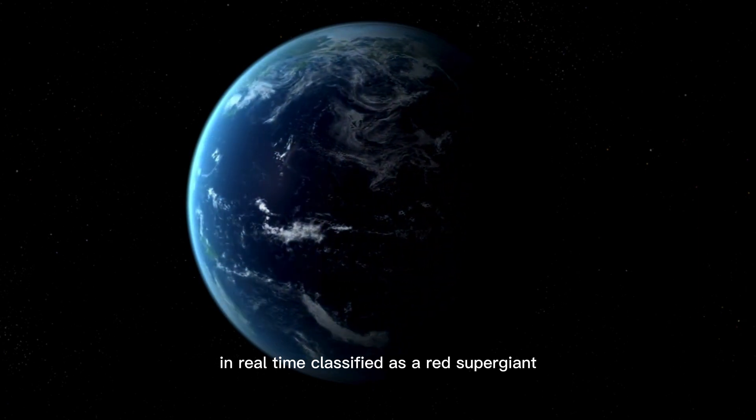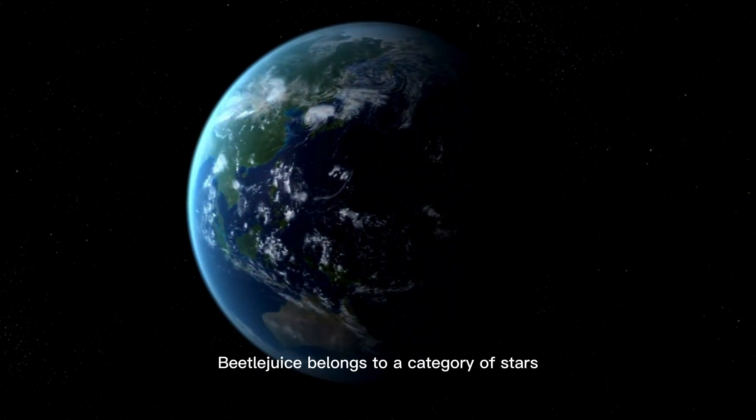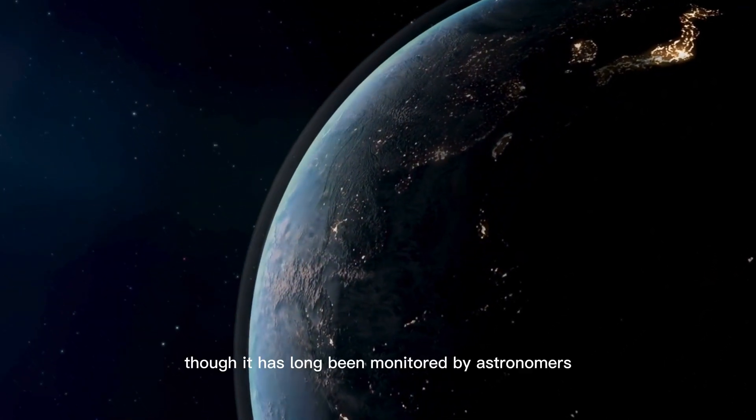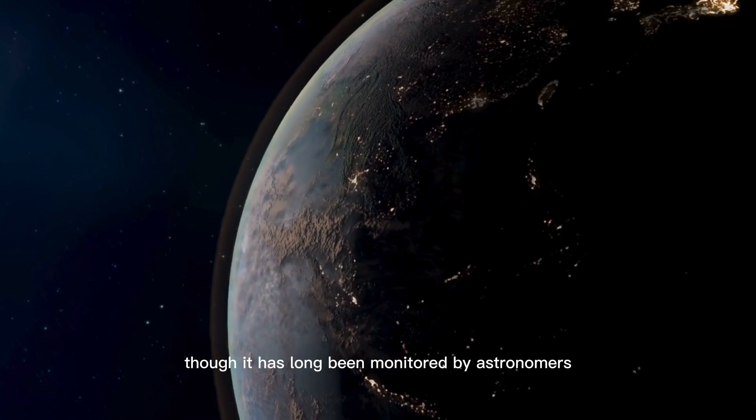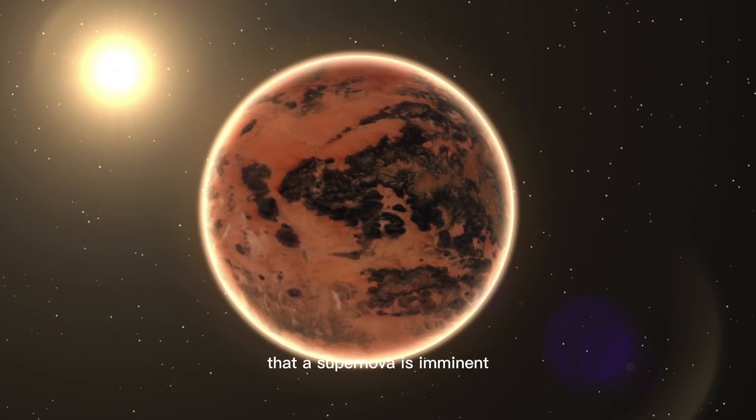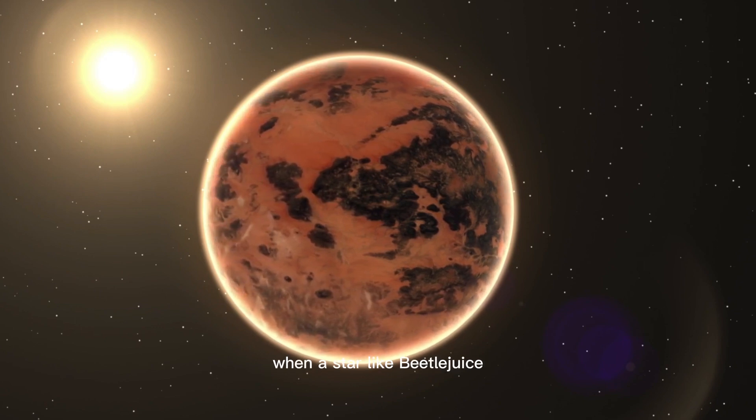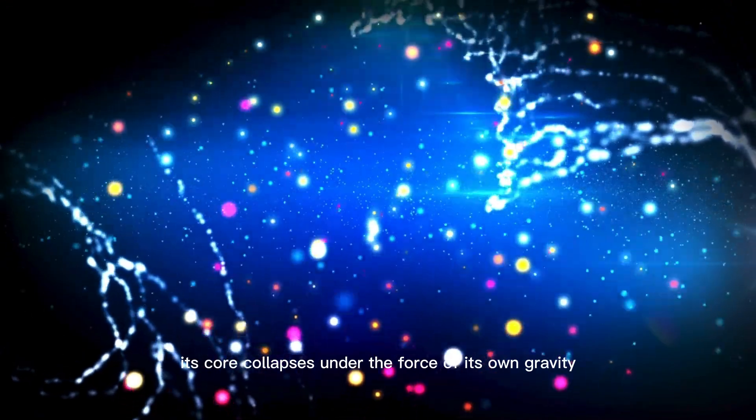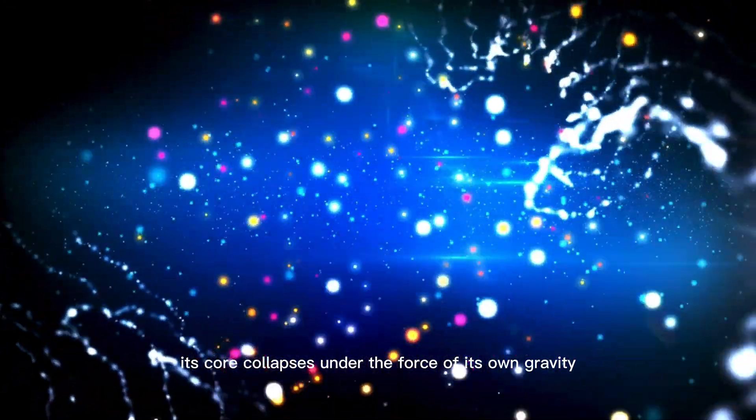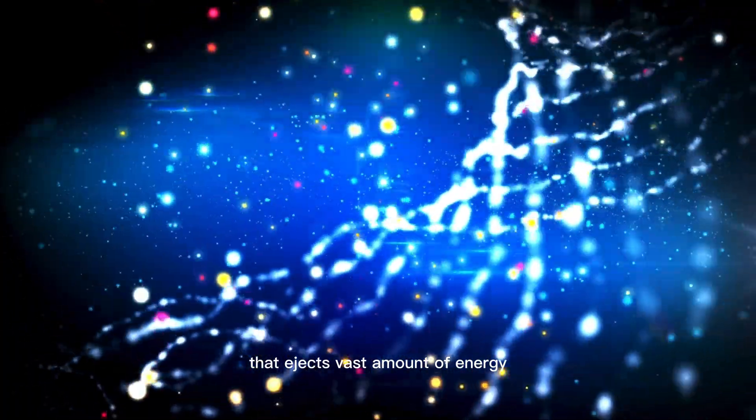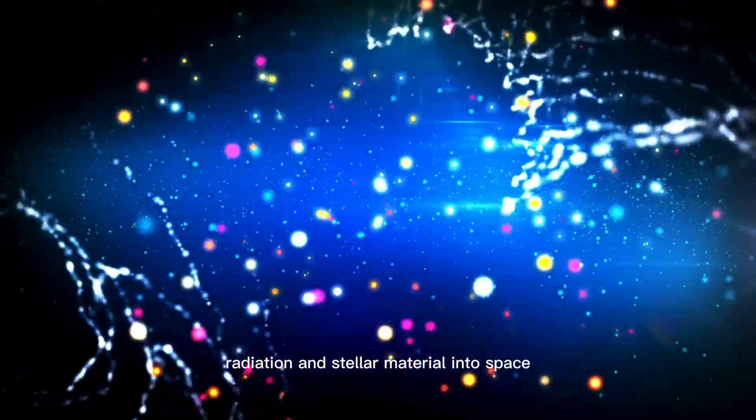Classified as a red supergiant, Betelgeuse belongs to a category of stars among the largest and most massive in existence. Though it has long been monitored by astronomers, its recent erratic brightness has intensified speculation that a supernova is imminent. When a star like Betelgeuse reaches the final stage of its life, its core collapses under the force of its own gravity, triggering a massive explosion that ejects vast amounts of energy, radiation, and stellar material into space.